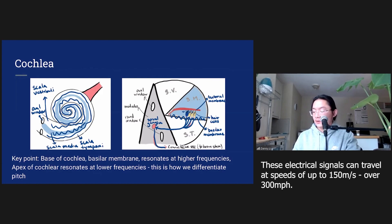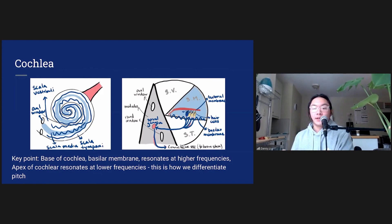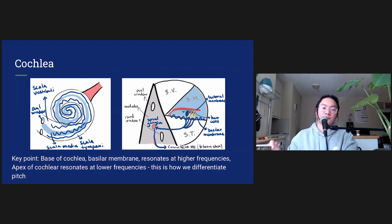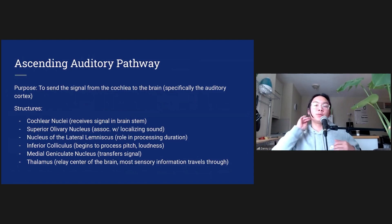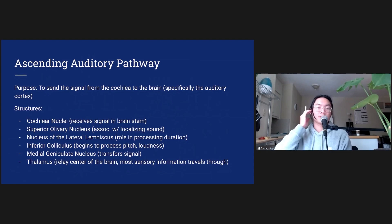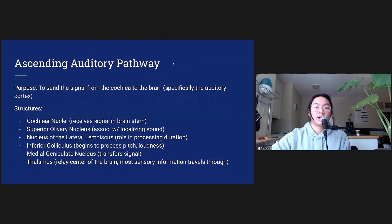The action potentials travel along to the spiral ganglia, which is a cluster of neurons that sends the signal to the brainstem. Something important about the cochlea is that it is tonotopically arranged, meaning we interpret higher frequencies at the base of the cochlea and lower frequencies at the apex. Once the signal reaches the brainstem, it begins to travel through the ascending auditory pathway, sending the signal from cranial nerve number 8 up to the auditory cortex in the brain.